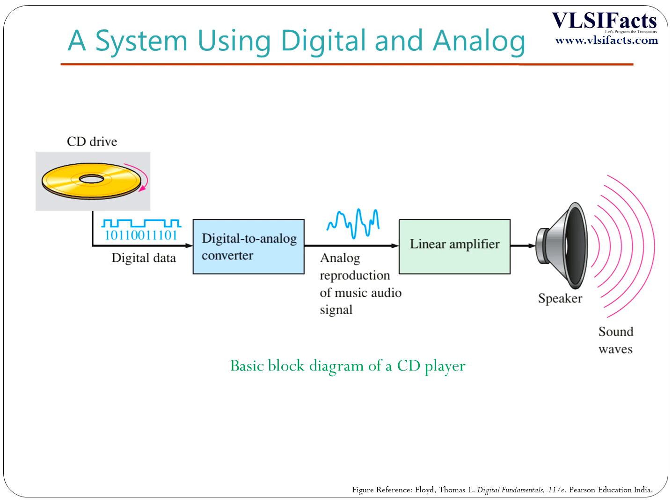This figure shows a CD player, which is an example of a system in which both digital and analog circuits are used. Music in digital form is stored on the compact disc. A laser diode optical system picks up the digital data from the rotating disc and transfers it to the digital-to-analog converter. The digital-to-analog converter changes the digital data into an analog signal that is an electrical reproduction of the original music. This signal is amplified and sent to the speaker, which converts the amplified electrical signal to the original sound wave with higher volume. When the music was originally recorded on the CD, a reverse process using an analog-to-digital converter was performed.